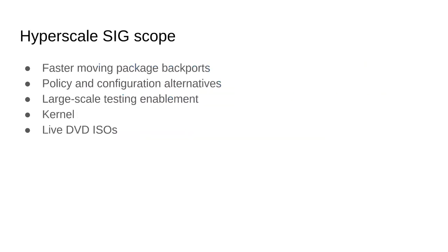So what do we actually do? The main thing the SIG provides is faster-moving package backports — packages that are available in CentOS already, but where we'd like to track a more recent version, maybe because we do active development or because there are more features we want to make available. These are meant to be drop-in replacements. We also carry packages with policy and configuration alternatives — packages slightly different from the ones in CentOS in terms of what options are enabled, for example, an iptables package that also has the legacy backend enabled.